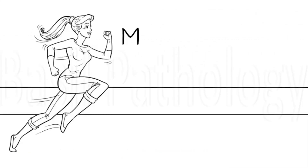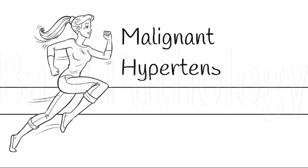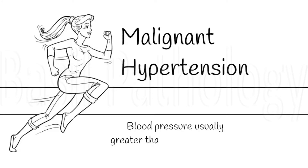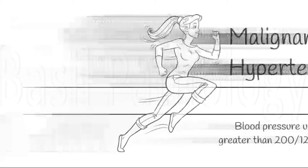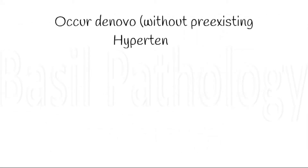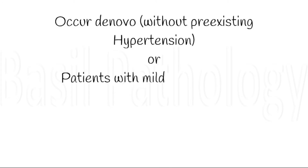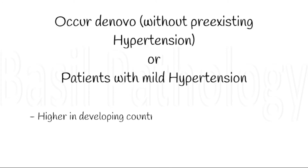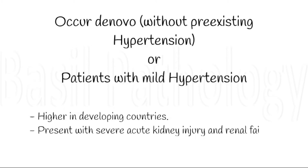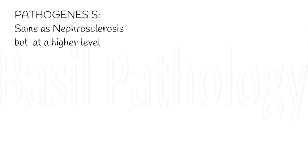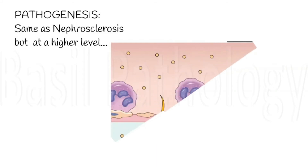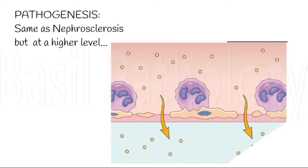Next, we move on to malignant hypertension, which is defined as blood pressure usually greater than 200/120 mmHg. It can occur de novo, that is without any pre-existing hypertension, or patients with mild hypertension may progress to the malignant type. It is more commonly seen in developing countries, and patients present with severe acute kidney injury and renal failure. The pathogenesis is similar to nephrosclerosis, starting with endothelial injury and platelet activation, but at a higher level.